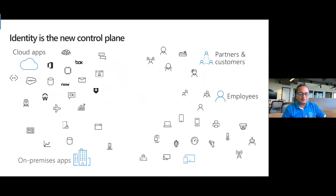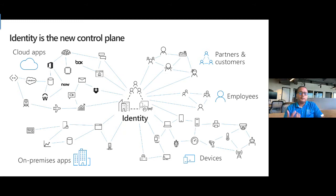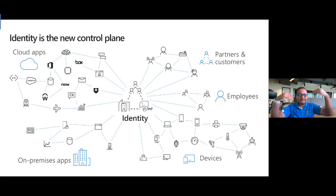Identity is the new control plane. Identity is in fact what helps determine whether a user should be able to access a given service, application, or piece of data. Data is sitting across all kinds of Office 365 cloud applications, apps in Azure, AWS, Box, Dropbox, G Suite — all over the place. Across all those apps, how do I tie everything to a single identity, a single user, a single version of me — and being able to protect that is what this is all about.